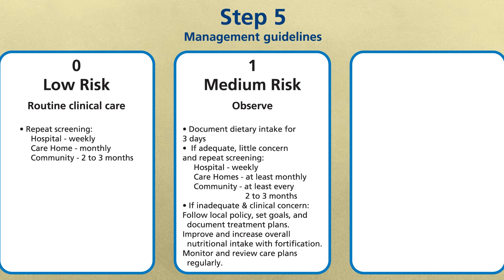For medium risk patients, document dietary intake for three days. If adequate, little concern and repeat screening — for hospitals weekly, care homes at least monthly, and community at least every two to three months. If inadequate and there's clinical concern, follow local policy, set goals and document treatment plans. Improve and increase overall nutritional intake with food fortification and monitor and review care plans regularly.